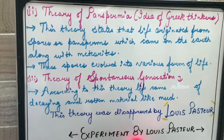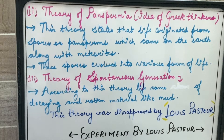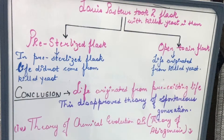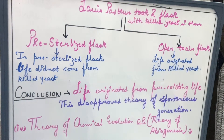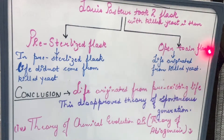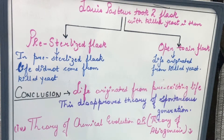Louis Pasteur performed an experiment to disapprove the theory of spontaneous generation. He took two flasks and placed killed yeast in both. One flask was pre-sterilized — free from any microbial contamination — while the other flask was kept open to air.